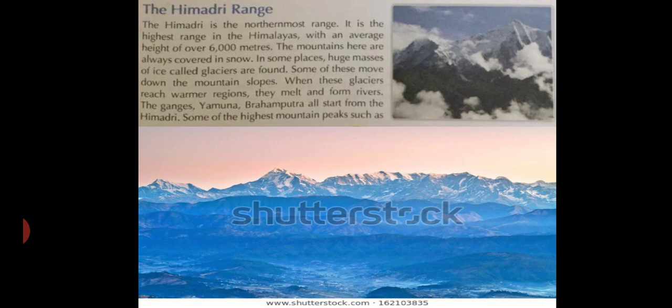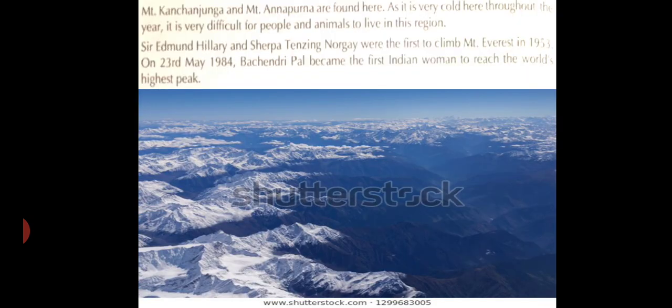The Ganges, the Yamuna and the Brahmaputra all start from the Himadri's glaciers. Some of the highest mountain peaks, such as Mount Kanchanjangha and Mount Annapurna, are found here.